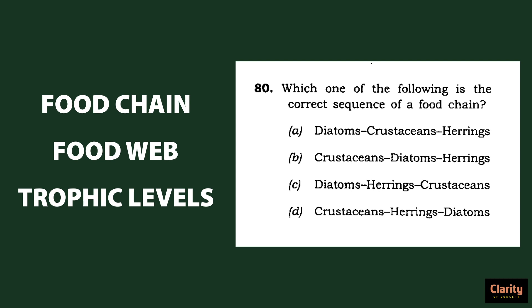Which of the following is the correct sequence of a food chain? Options are diatoms, crustaceans and herrings in different order. If you don't know the meanings of diatoms, herrings, or what they even look like, this question becomes very difficult to answer. Therefore, we shall study as many food chain examples as possible.